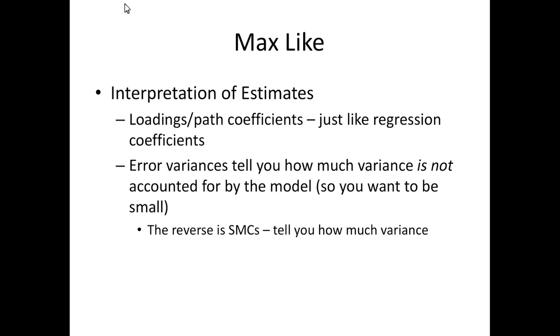So the reverse of the error variance is the squared multiple correlation, and that tells you how much variance is accounted for in the model. So error variances we want to be small because those are things we don't know. Path coefficients are just like interpreting regression coefficients. And then I don't have this on here apparently, but interpreting a double-headed arrow is just like a correlation if you're looking at a standardized solution. So you will say as one goes up, the other goes up, but you're not predicting a direction.